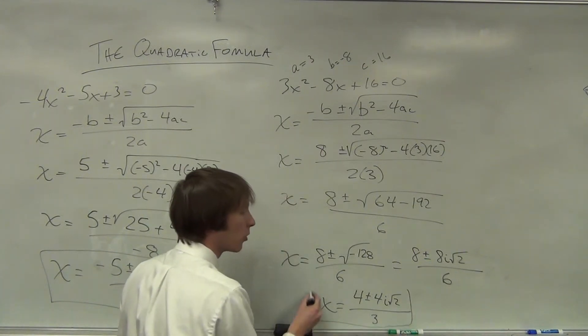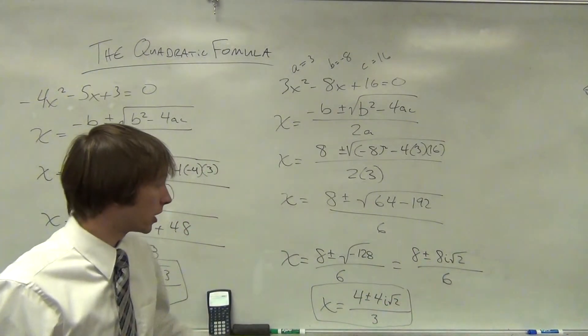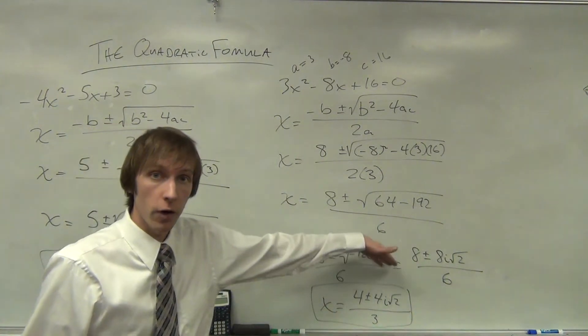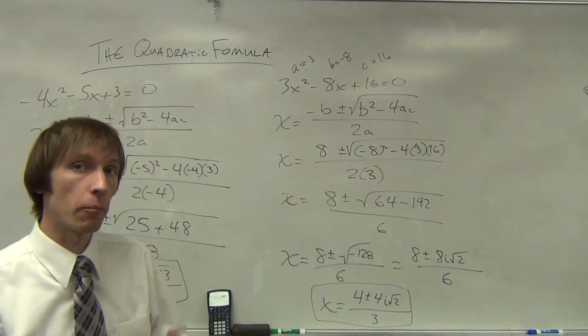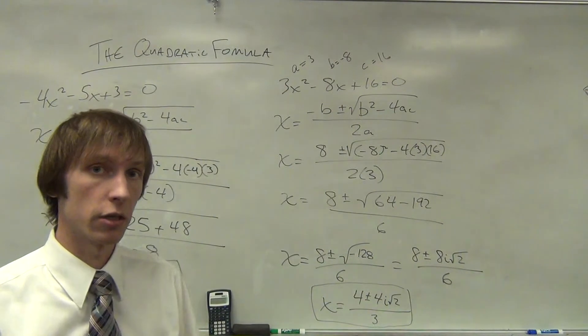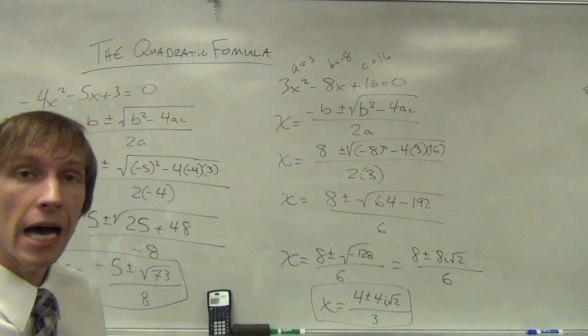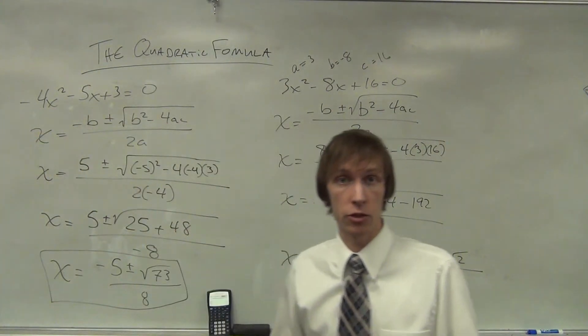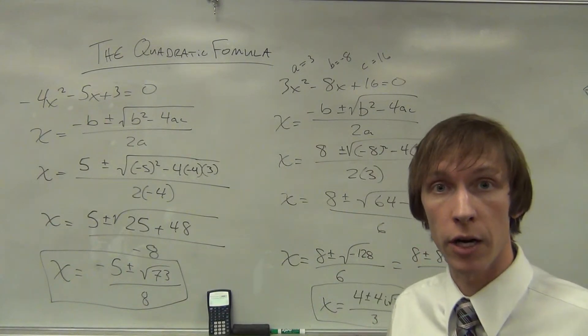This is our solution. It's both of our solutions. We have 4 + 4i√2 over 3 and 4 - 4i√2 divided by 3. This is how you use the quadratic formula to solve quadratic equations.